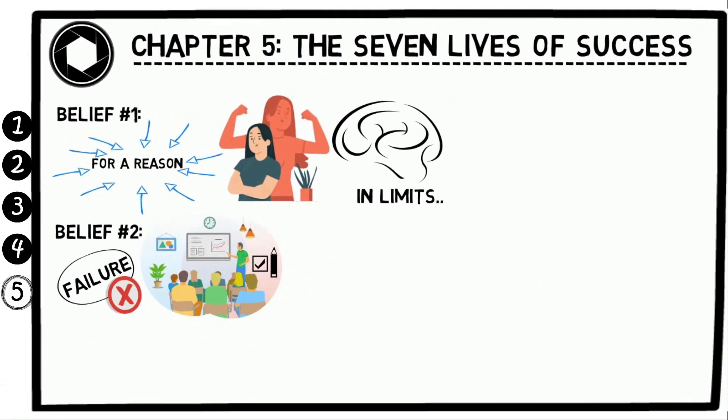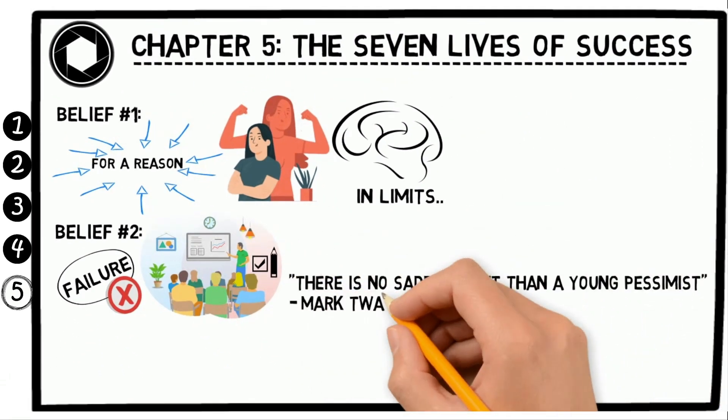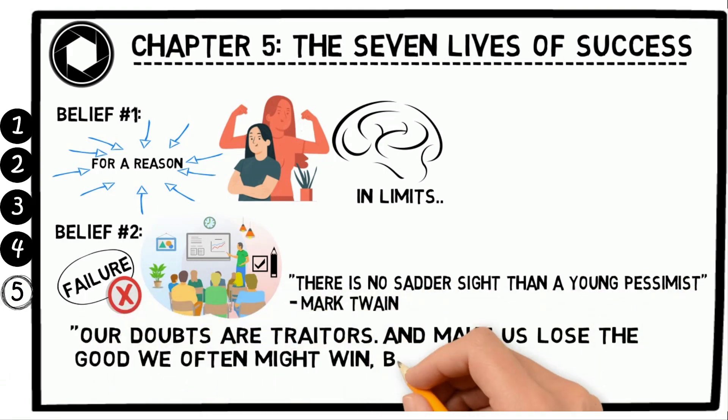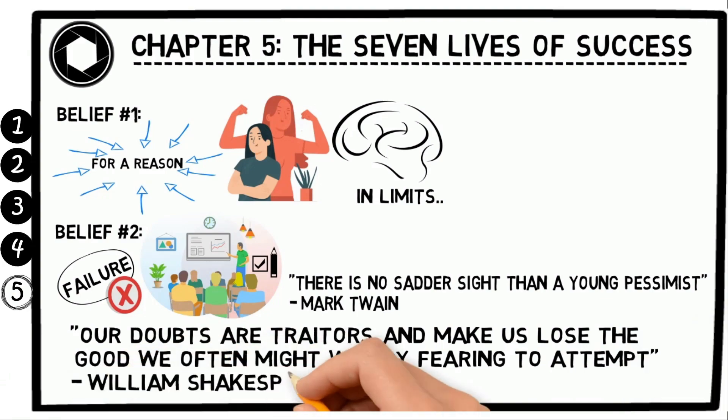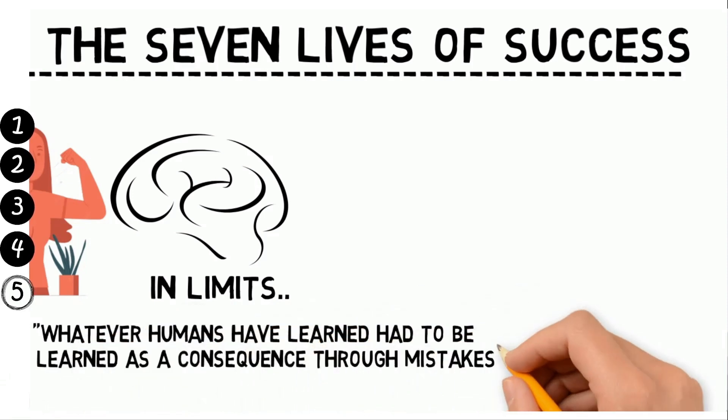There is no sadder side than a young pessimist, said Mark Twain. Our doubts are traitors and make us lose the good we often might win by fearing to attempt - William Shakespeare. Whatever humans have learned had to be learned as a consequence through mistakes - Buckminster Fuller.